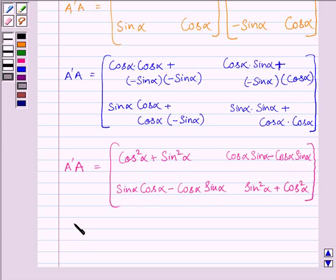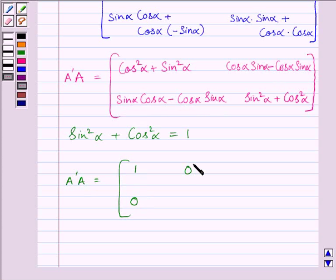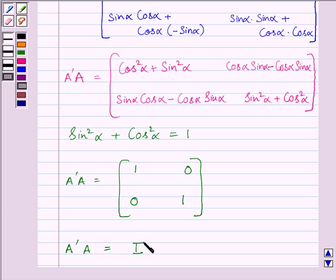We know that sin squared alpha plus cos squared alpha is equal to 1. So we substitute and get A transpose A equal to the matrix: 1, 0, 0, 1, which is equal to I. So we get A transpose A is equal to I.